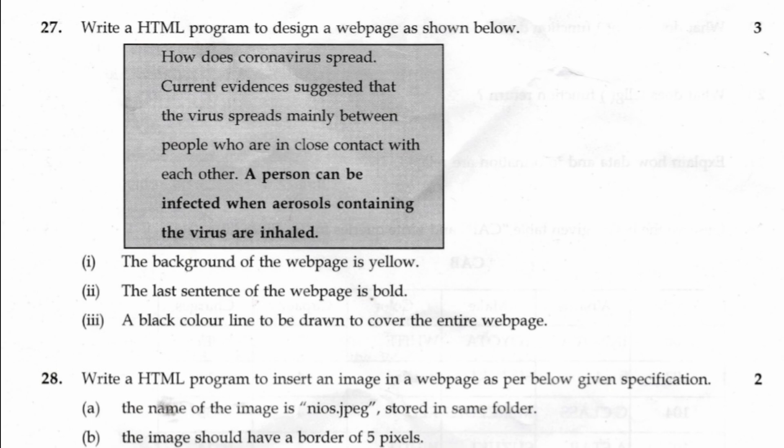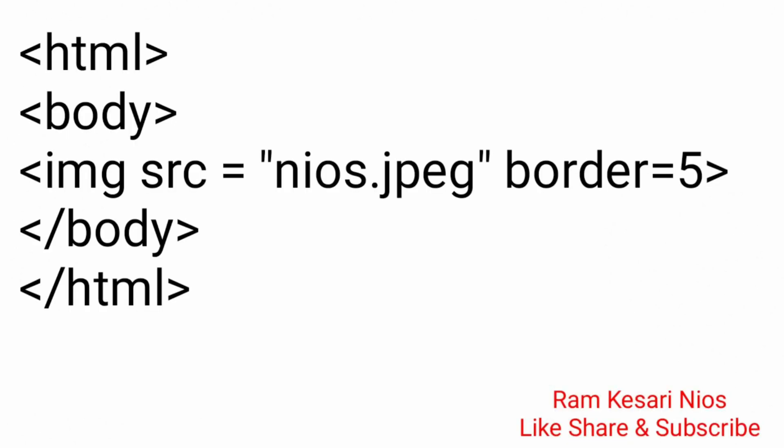Question 28: Write a HTML program to insert an image in a web page as per the below given specification. A. The name of the image is nis.jpeg stored in the same folder. B. The image should have a border of 5 pixels. <HTML><body><img src="nis.jpeg" border="5"></body></HTML>